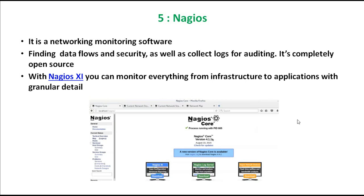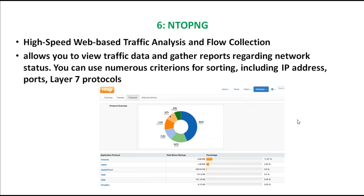The next software is called ntopng. It has high-speed traffic analysis and flow collection, allowing you to view traffic data and gather reports regarding network status. You can use numerous criteria for sorting — IP addresses, ports, and Layer 7 protocols. It gives whole information about all your traffic flows, IP addresses, and all Layer 7 protocols.